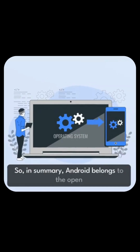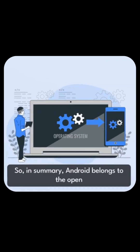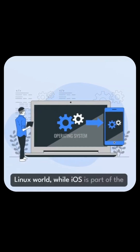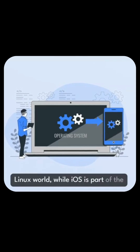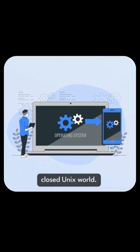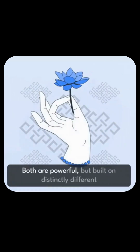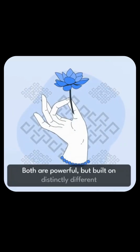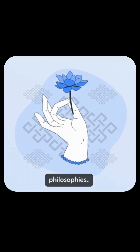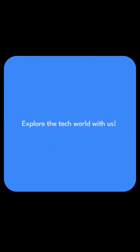In summary, Android belongs to the open Linux world, while iOS is part of the closed Unix world. Both are powerful but built on distinctly different philosophies. Explore the tech world with us — subscribe for more.